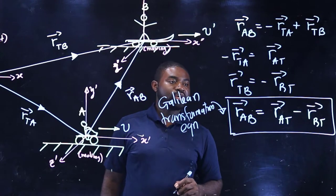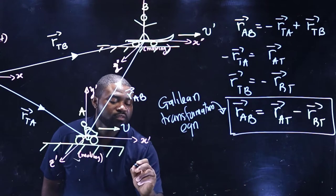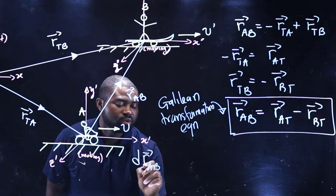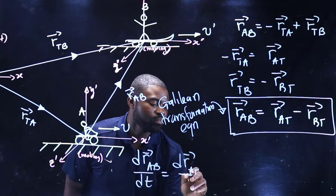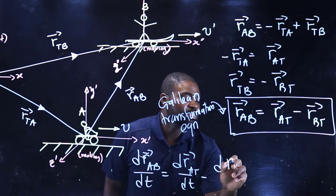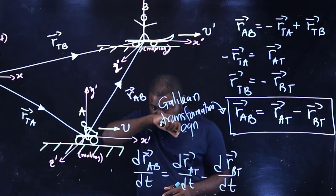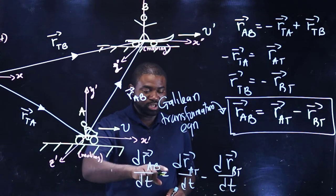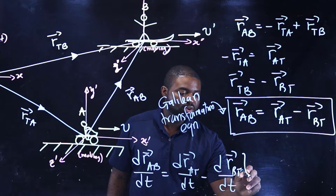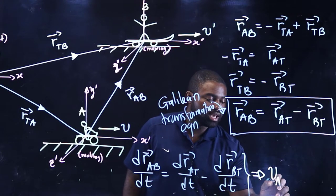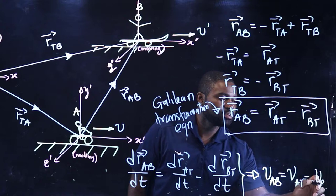If we differentiate the Galilean Transformation Equation, you will have dR-A-B/dt equal to dR-A-T/dt minus dR-B-T/dt. This is the velocity of A with respect to B, this is the velocity of A with respect to T, and this is the velocity of B with respect to T. So what this means is that V-A-B is equal to V-A-T minus V-B-T.